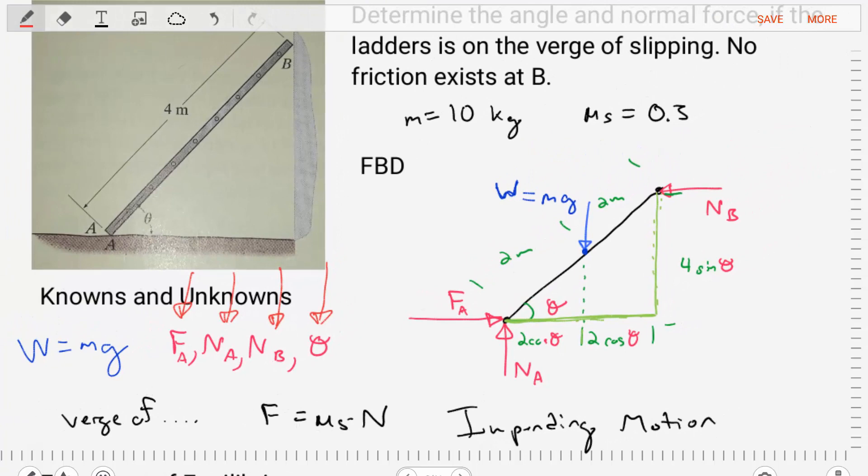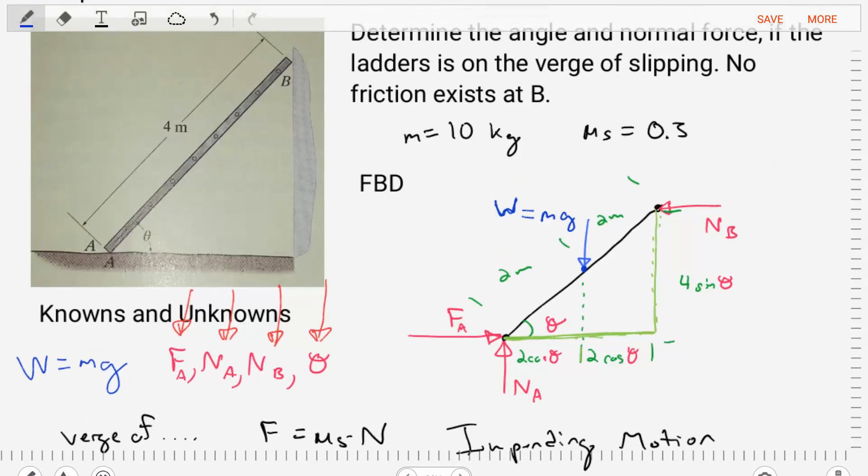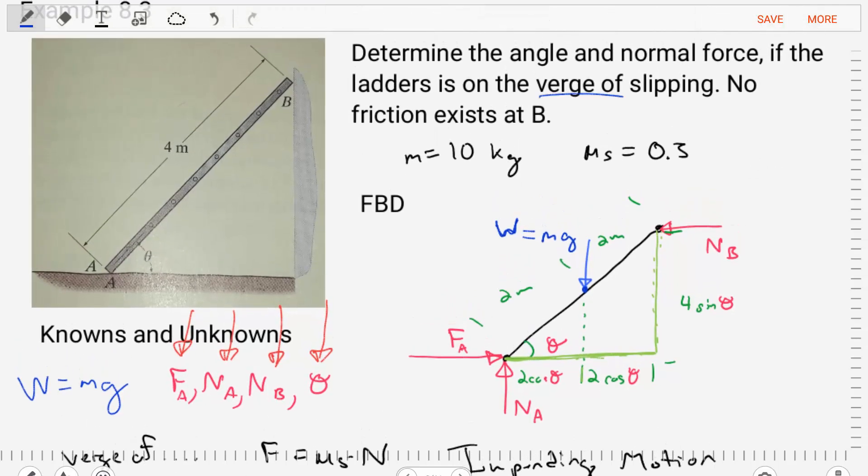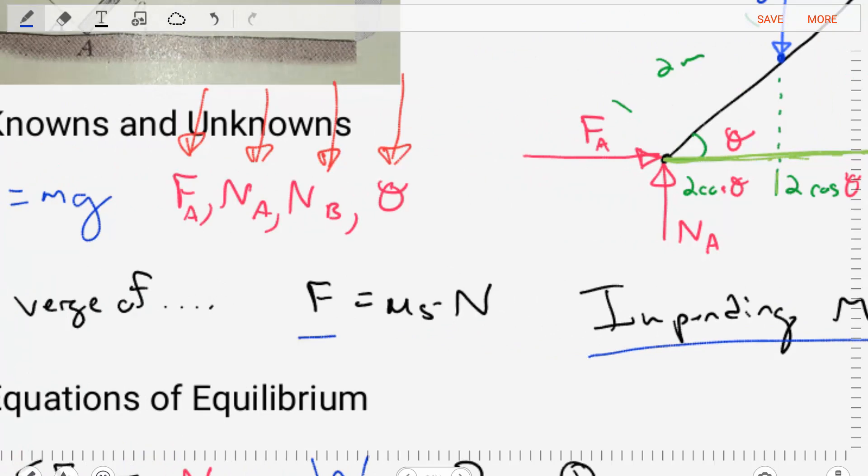Now, to solve for these four unknowns, we're going to need one extra equation. And that equation is going to come from the friction relationship. In this problem, we're told the ladder is on the verge of slipping. That's the instant just before it slips. That means we have a case of impending motion. And the frictional force is equal to the friction coefficient mu s times the normal force n. So this is going to be our extra equation that's going to help us to solve for those four unknowns.